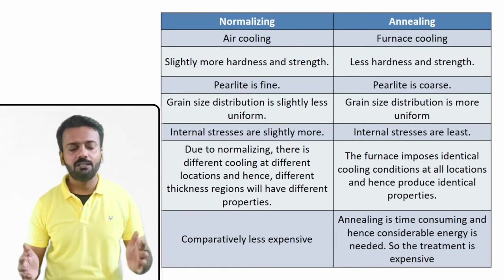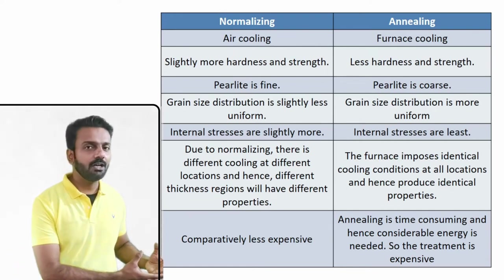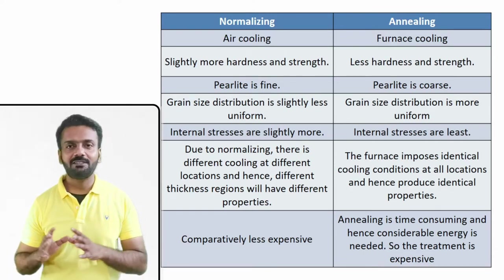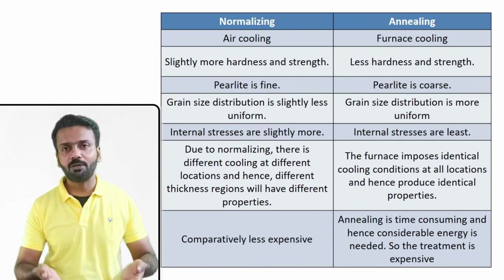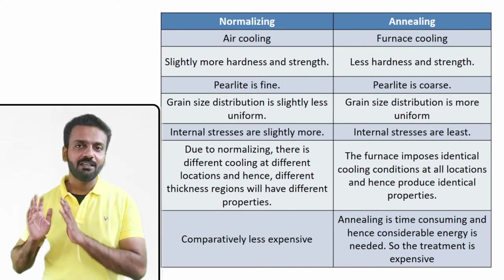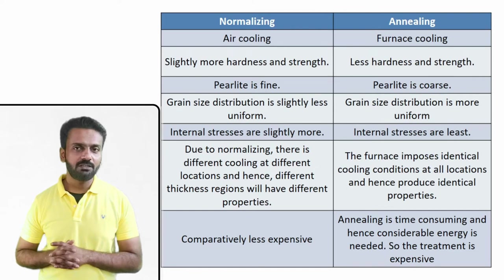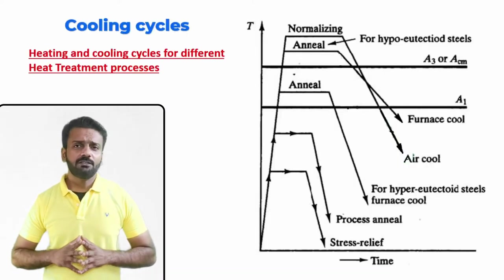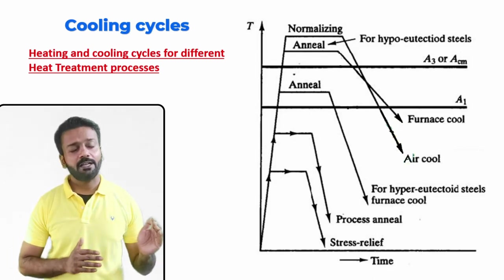Normalizing is comparatively less expensive than annealing because the furnace is not occupied during cooling — the samples are simply taken out of the furnace and left to cool in air. In annealing, the furnace is occupied throughout the cooling cycle since the sample cools with the furnace, preventing the furnace from being used for anything else and therefore increasing costs.